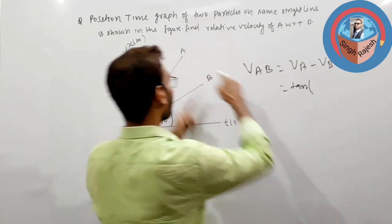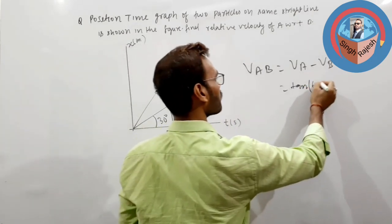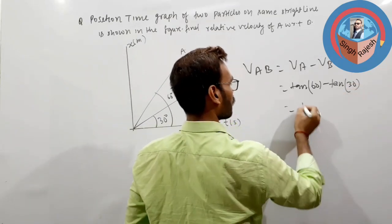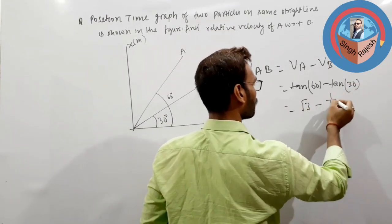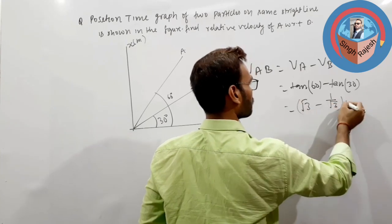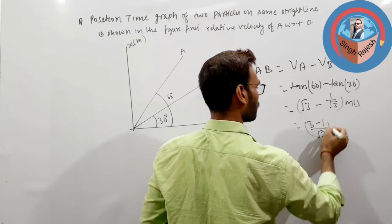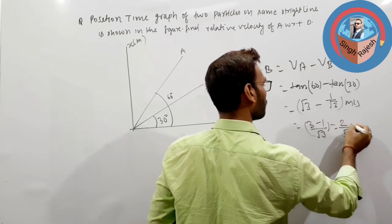Tan for A, it is 60 degrees, minus tan for B, it is 30 degrees. Root 3 minus 1 upon root 3, meter per second. 3 minus 1 upon root 3, 2 upon root 3 meter per second.